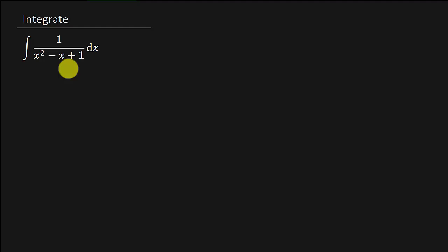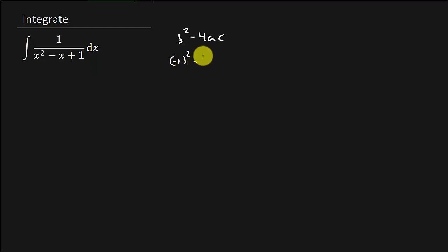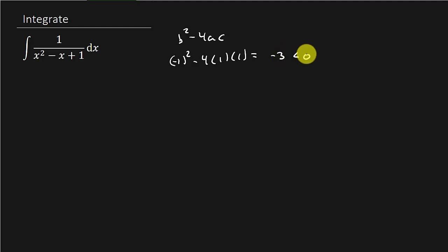It has imaginary solutions. You can look at the discriminant — b squared minus 4ac — where a is the coefficient of the squared term, b is the coefficient of the x term, and c is your constant. So if you plug this in, you get negative 1 squared minus 4 times 1 times 1, which equals negative 3, which is less than 0. So that means we would get imaginary solutions.